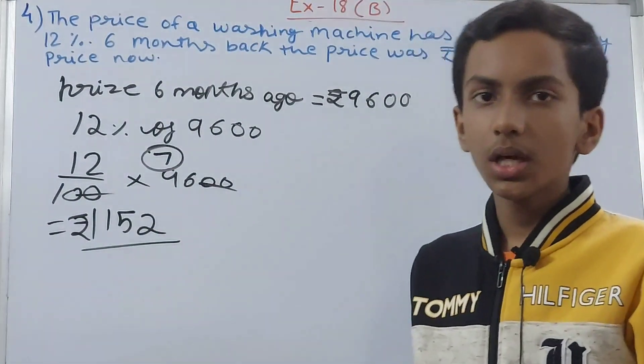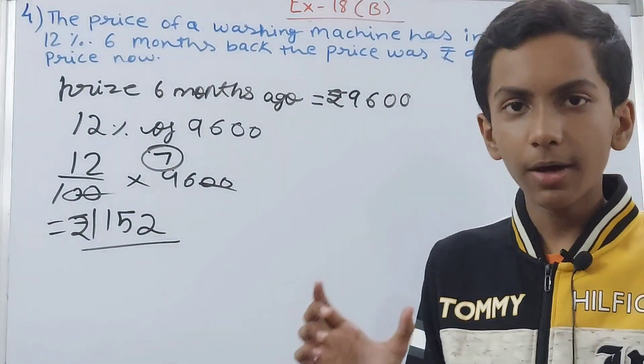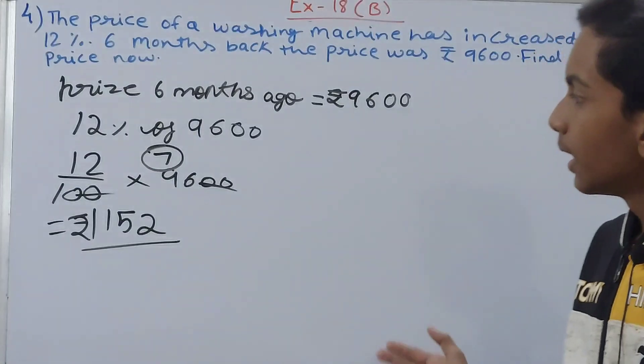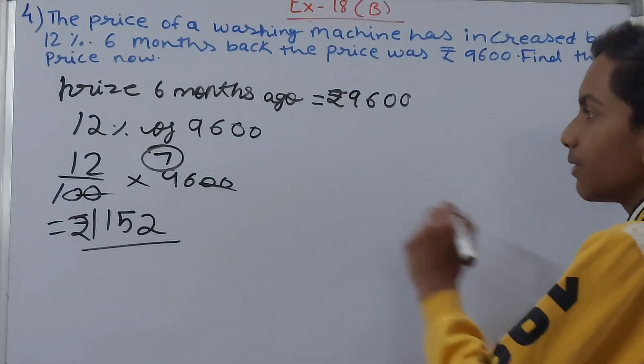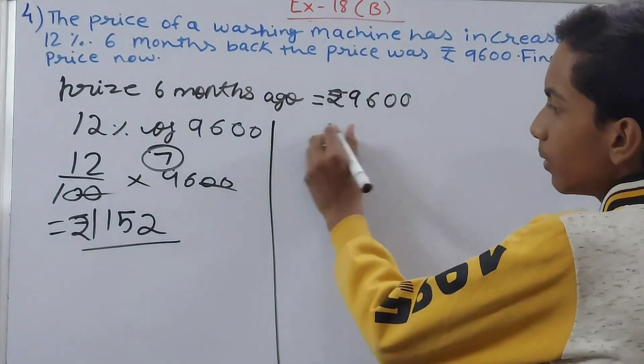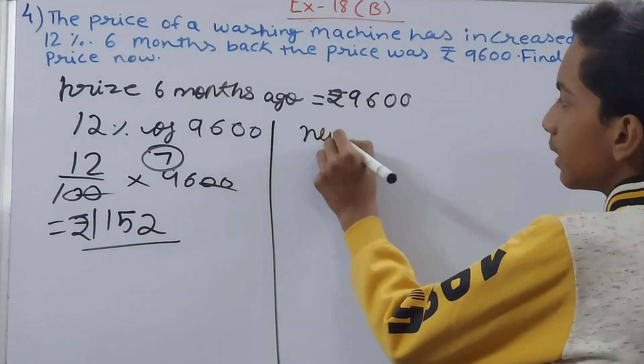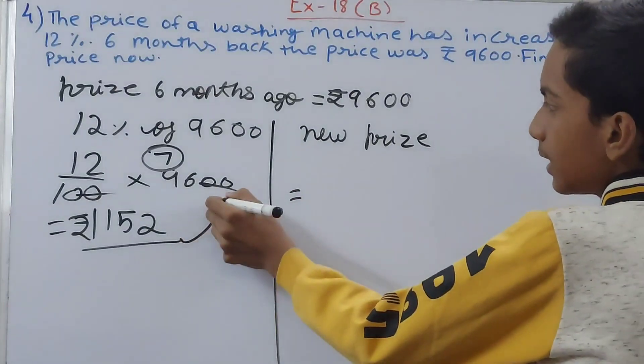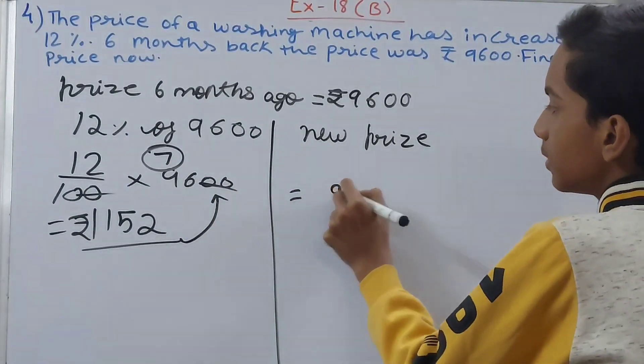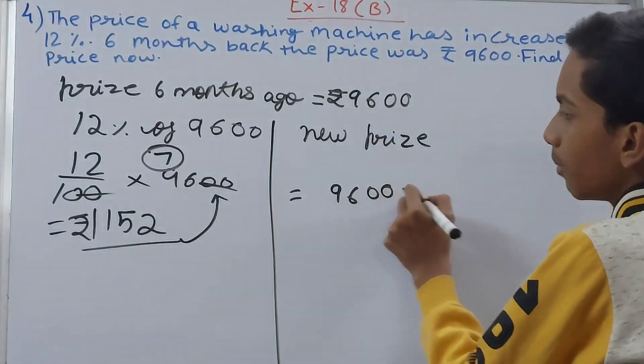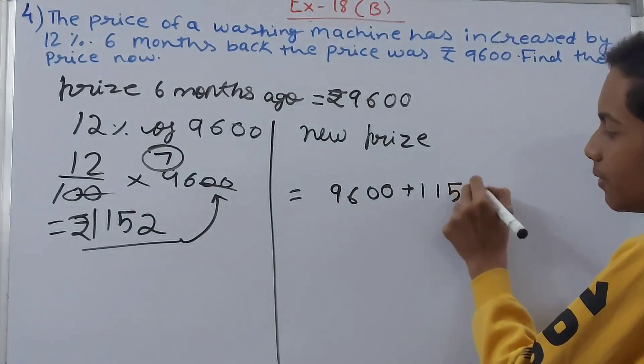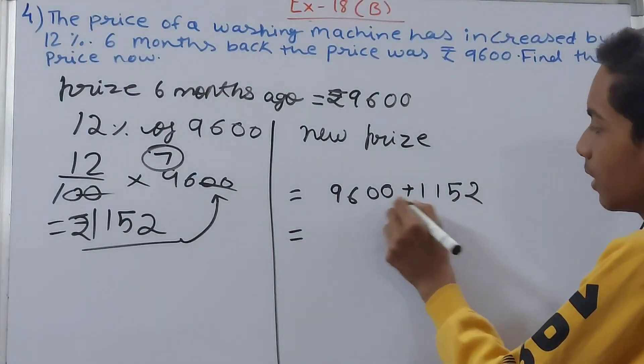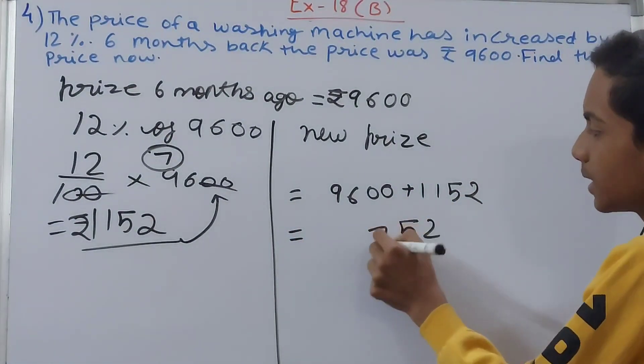The money that we get after this - the new price becomes 9600 plus this increase. So 9600 plus 1152. We get here 5 to 7 and 10, 1072, ₹10752.